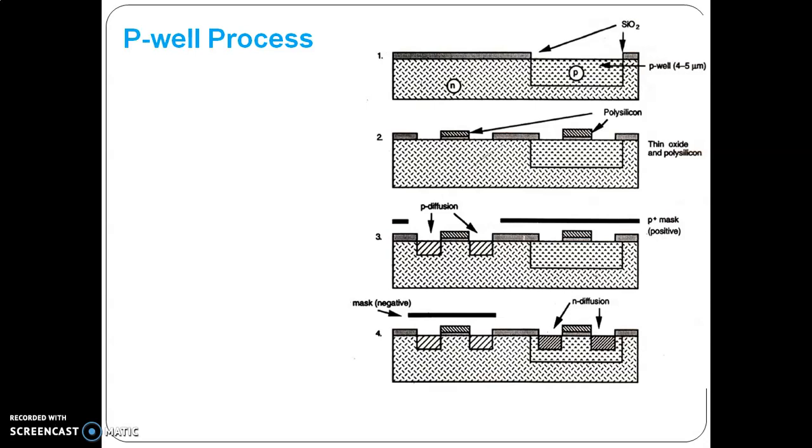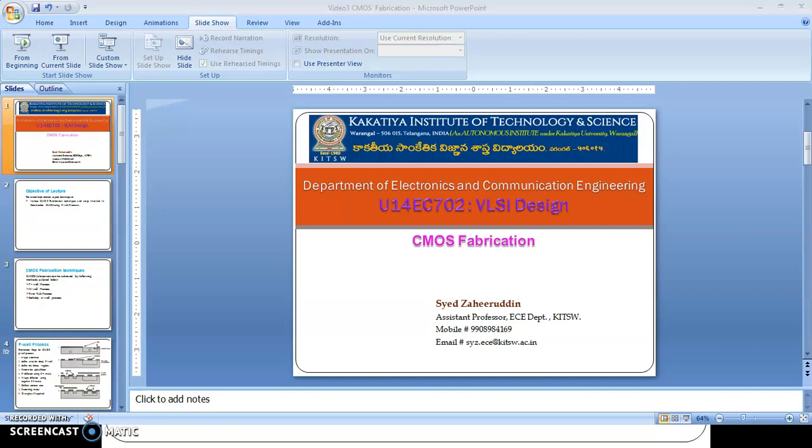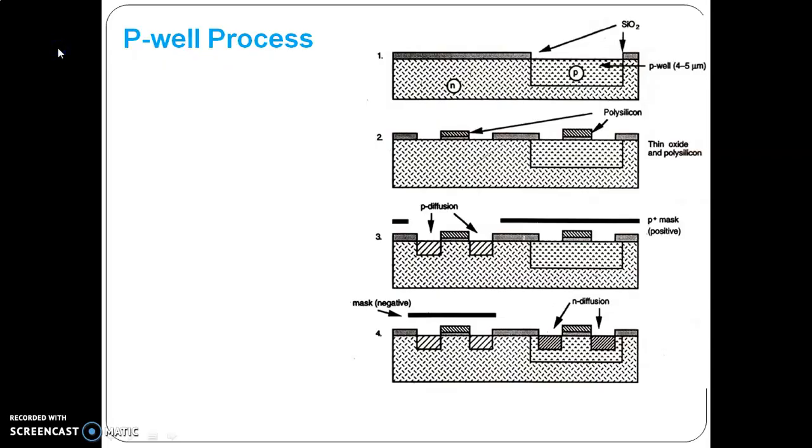In the third diagram you will be forming the P-MOS, and in the fourth diagram N-MOS would be formed. Overall here, you will be getting the total N-MOS and CMOS. These are the steps of fabrication of CMOS P-well process. The first step is taking an N-type substrate.